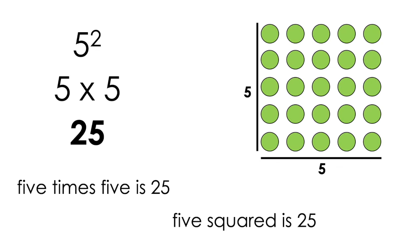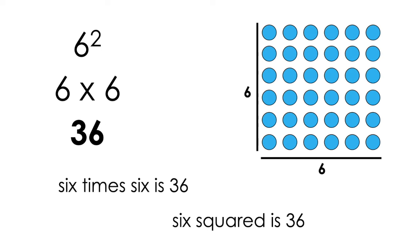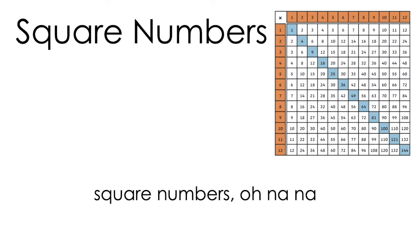5 times 5 is 25, 5 squared is 25. Got me squaring like ooh. 6 times 6 is 36, 6 squared is 36. Oh na na na na na. Square numbers,